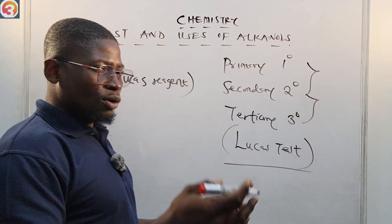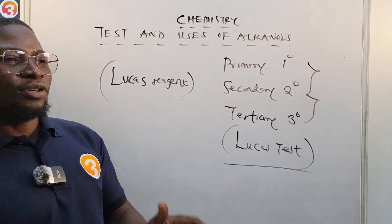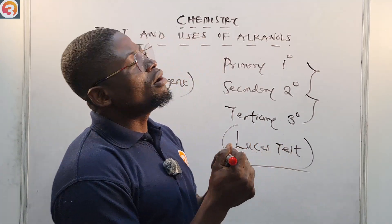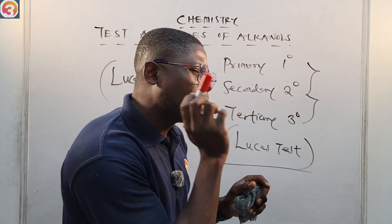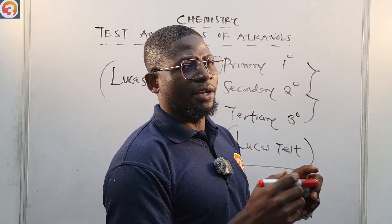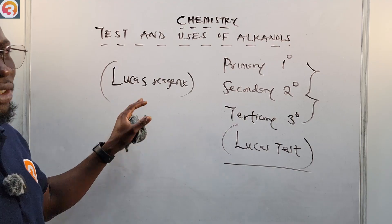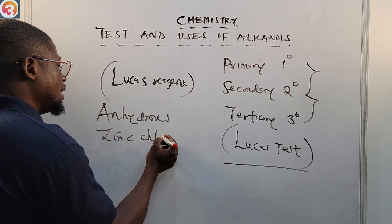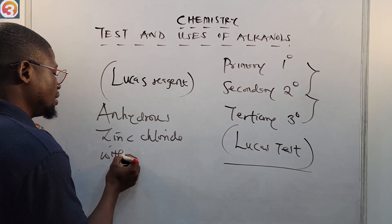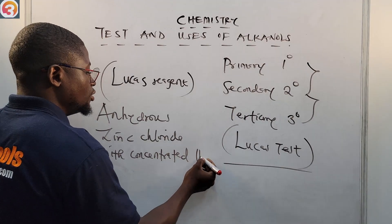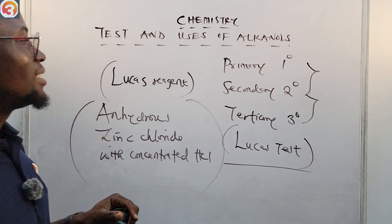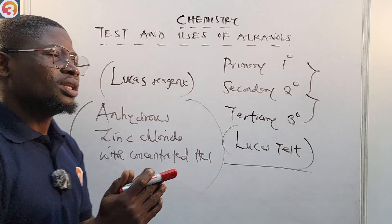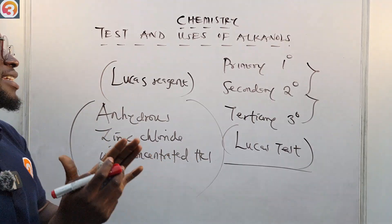We add the Lucas reagent to an alkanol that we do not yet know whether it is primary, secondary, or tertiary. There are observations you are supposed to see that will let you know — from those observations, you can tell whether you have a primary, secondary, or tertiary alkanol. The Lucas reagent itself is anhydrous zinc chloride (ZnCl₂) with concentrated hydrochloric acid (HCl).